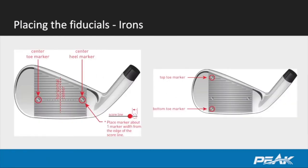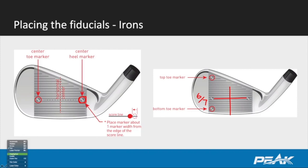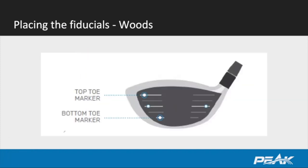In order to get the best possible information from the club tracking cameras, we need to make sure that we apply the fiducials in the way they are designed. We want them in between grooves six and seven on a standardized size iron head. This is what's going to accurately define both the vertical and horizontal centers used for impact point measurement, and it's also going to ensure consistent data from day to day and client to client.